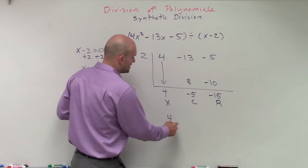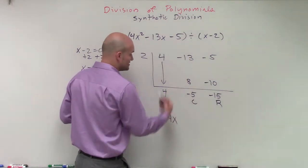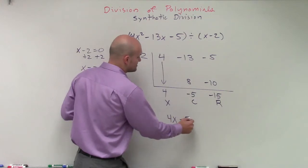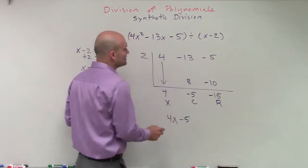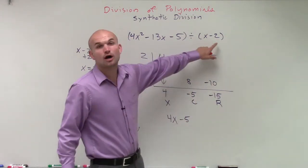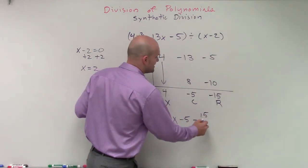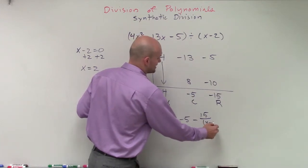So my quotient for this is going to be 4x minus 5. And then I have a remainder. And we can take our remainder and put it over our divisor. So that's going to be a negative 15 over x minus 2.